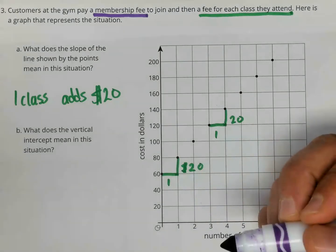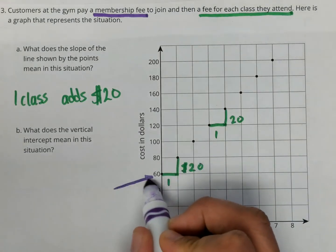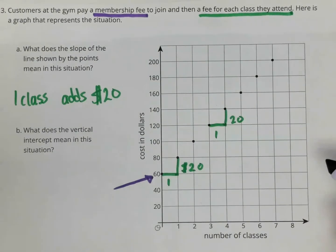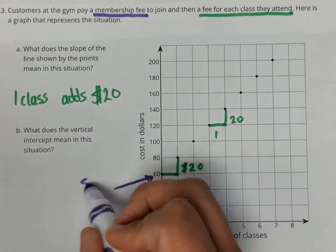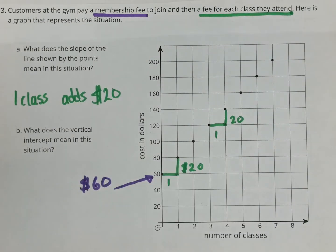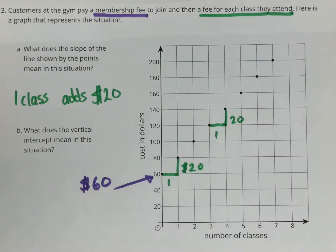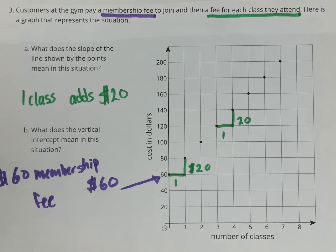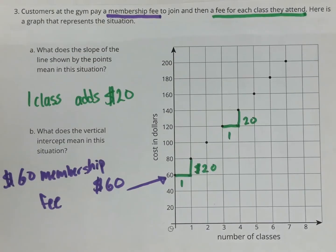Before you take any classes, there's already a fee that the customer paid. It's this right here. So before they take any classes, they pay $60. That is the membership fee that we saw in the beginning. So if a customer signs up and takes zero classes, they're still going to pay $60. That's what the vertical intercept means here—the $60 membership fee.